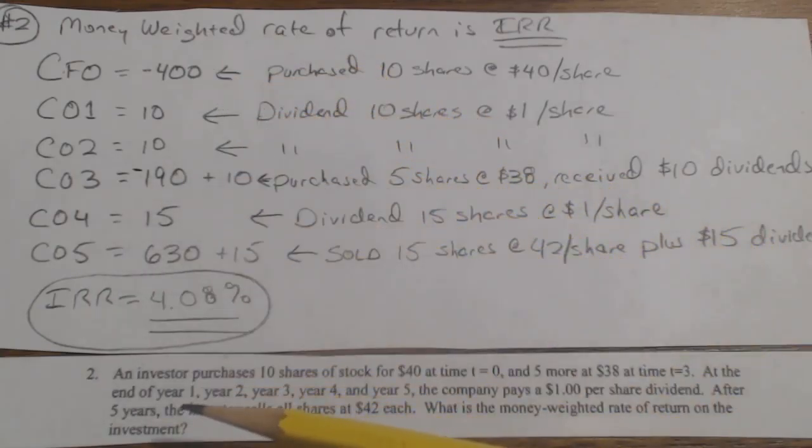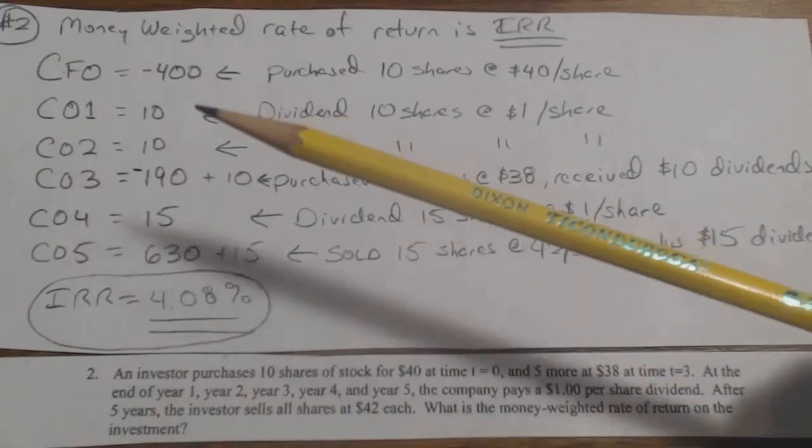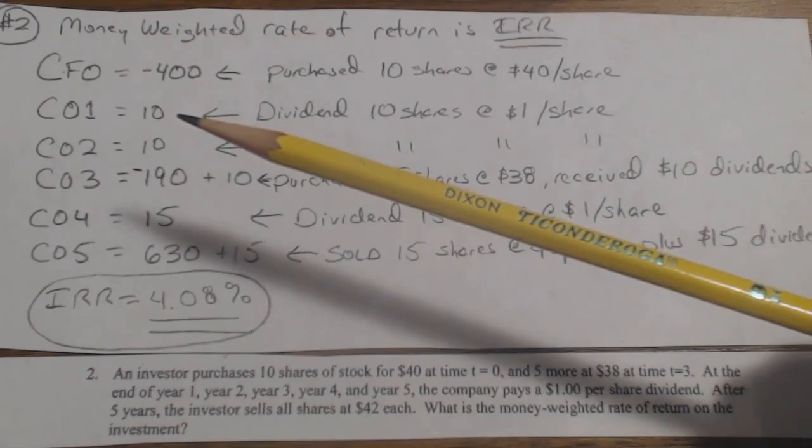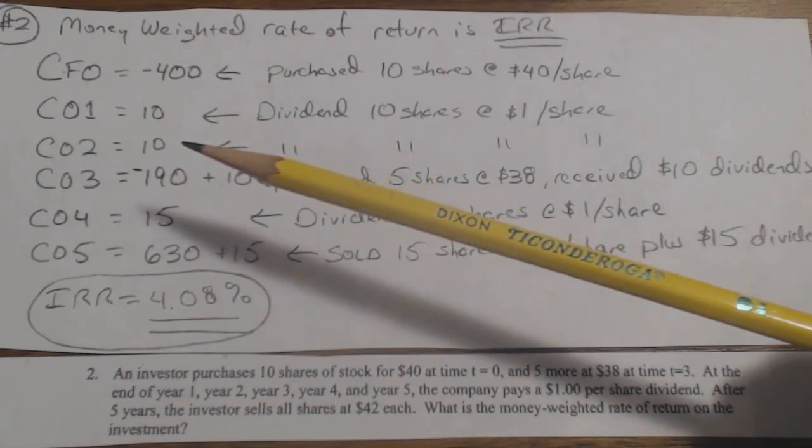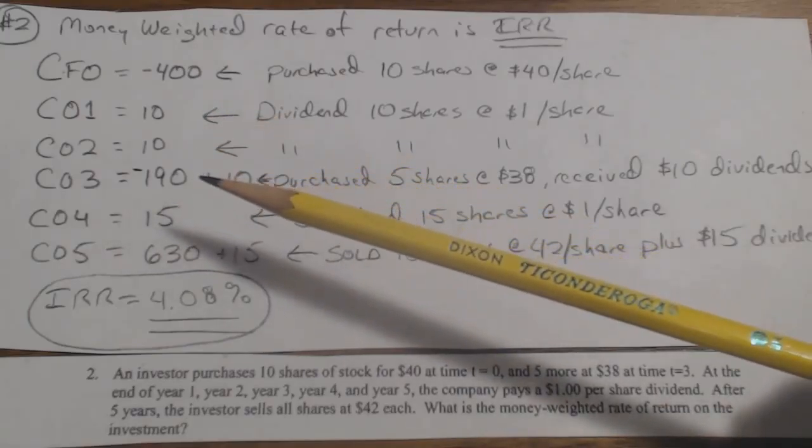Okay, and then it says at the end of year 1, 2, 3, 4, and 5, you get a dollar per share dividend. So at the end of year 1, you get $10, because 10 shares times $1. Year 2, you get $10. Those are inflows, remember, because they're dividends.